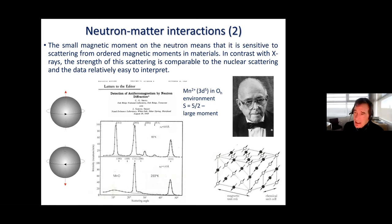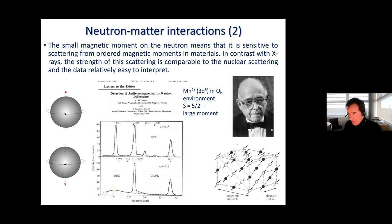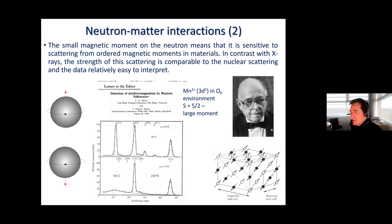Nowadays you can also probe magnetic structure with resonant X-ray scattering, but it is a much weaker effect — even with brilliant synchrotron beams it remains relatively subtle. Furthermore, the resonance energy tends to correspond to relatively low X-ray energies and therefore relatively long wavelengths. From the Bragg relation nλ = 2d sinθ, if λ is long then for a given d-spacing θ must be large, which severely limits the number of reflections you can measure before 2θ reaches 180°.